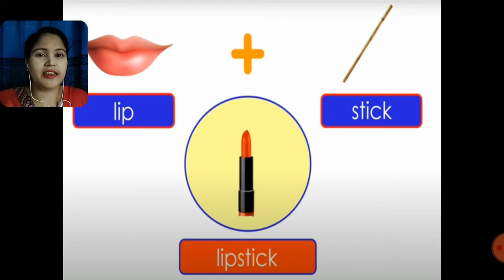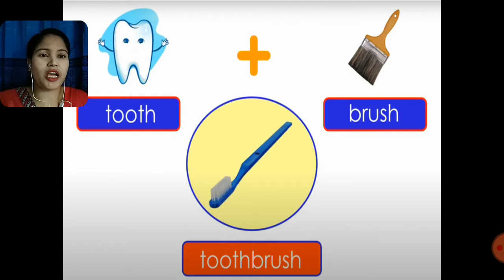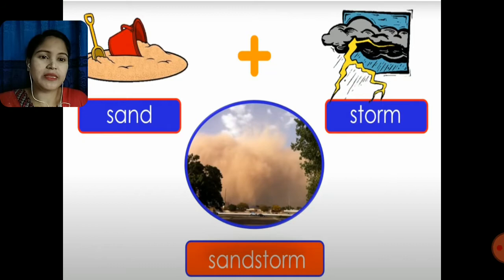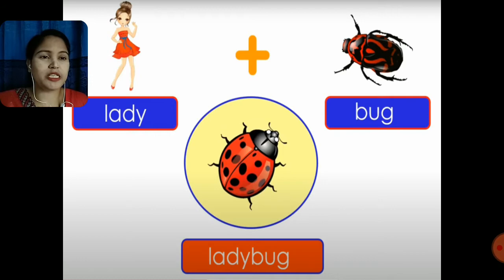Lip plus stick gives lipstick. Arm plus chair gives armchair. Tooth plus brush gives toothbrush. Dragon plus fly gives dragonfly. Sand plus storm gives sandstorm. Rain plus coat gives raincoat. Lady plus bug gives ladybug.